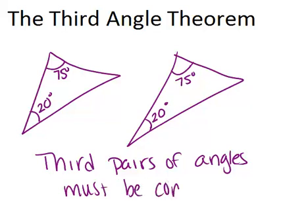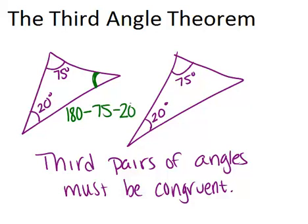And this should make sense because once you know two angles in a triangle you can use the triangle sum theorem to find the third angle. So if we wanted to figure out the third angle in the triangle on the left we would do 180 minus 75 minus 20 and get our answer, which is 85. So this angle is 85.